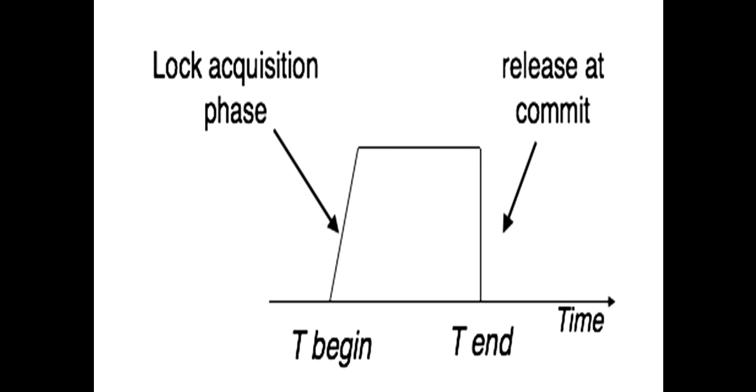I am repeating again: lock acquisition phase one after another. So T begins with transaction begin, lock acquisition phase started. This is same as 2PL, means gradually acquiring the lock, so the curve takes this form. Then the execution phase is ongoing.